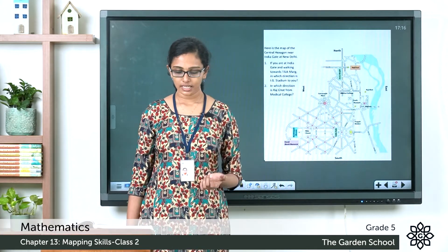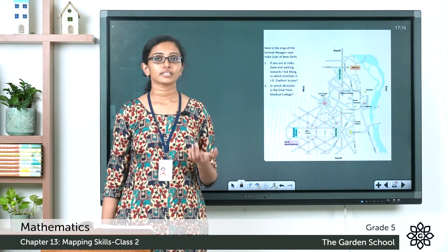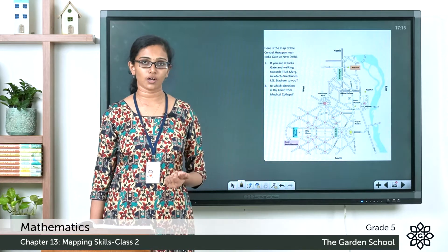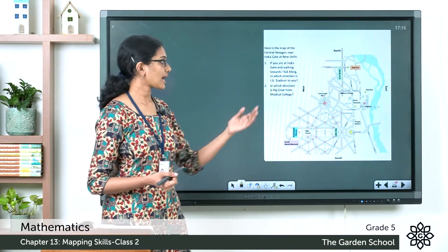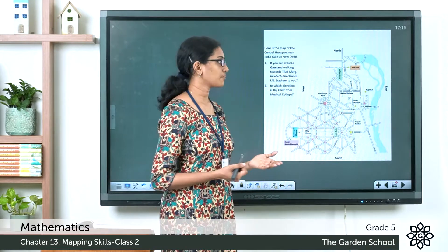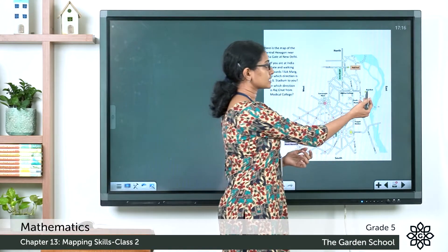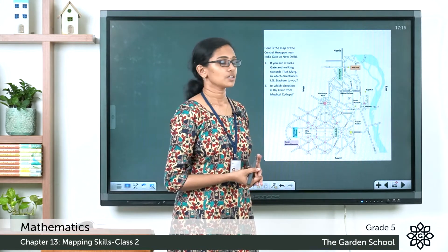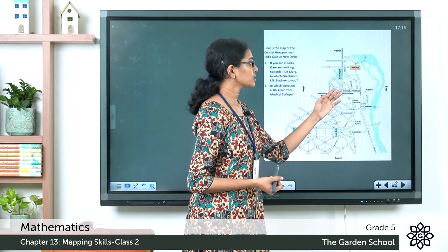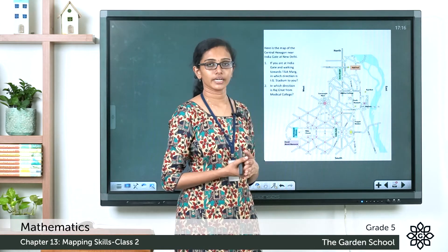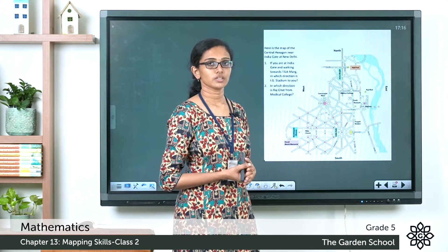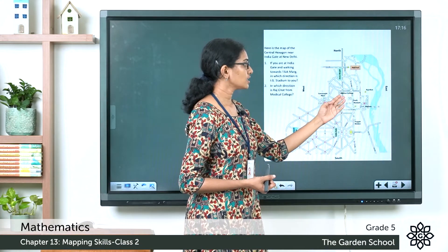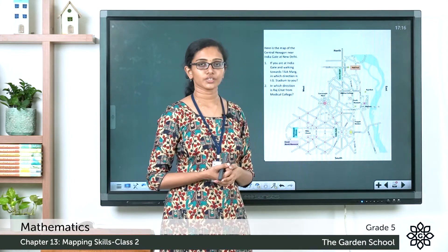Now let's see the second question: in which direction is Rajkot from medical college? Here you can see Rajkot and here is medical college. So Rajkot is to the east of medical college. Observe the map carefully — you can see Rajkot here to the east of medical college.